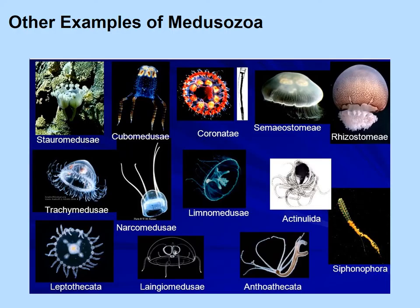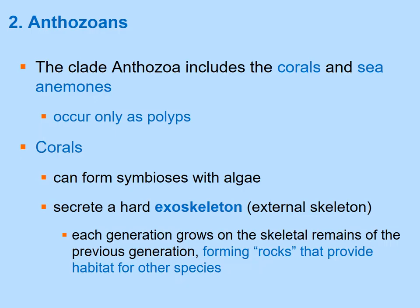Within Medusazoa there is considerable diversity. One example is Cubozoa, or box jellies. Some of these organisms can produce light underwater. Now moving on to Anthozoa — the second major cnidarian clade — which includes corals and sea anemones.